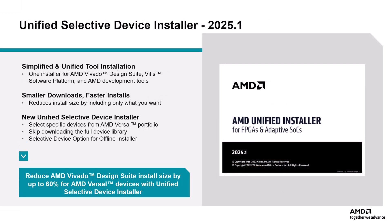With the Unified Selective Device Installer (USDI) in AMD Vivado 2025.1, you now have the option to download only the device files you need for your specific design. Previously, Vivado, Vitis, and related development tools were bundled together in a large install. Now, USDI allows you to consolidate these tools into a single installer, while giving you the ability to select only the necessary device files.